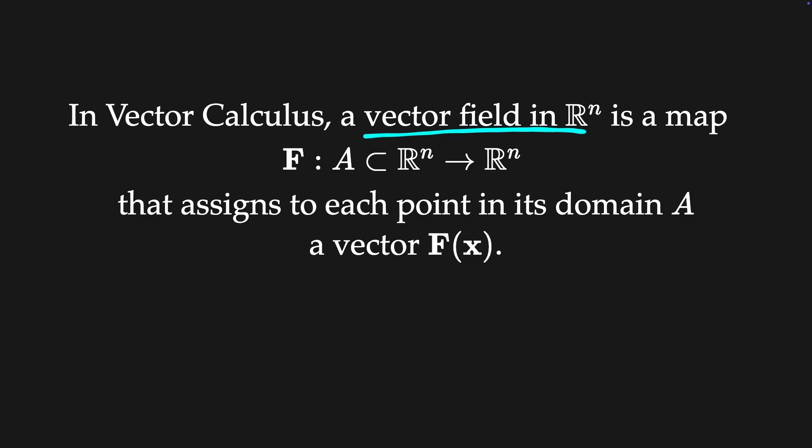In vector calculus, a vector field in Rn is a map that assigns to each point in its domain A, a vector F.